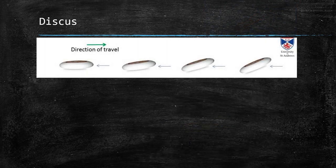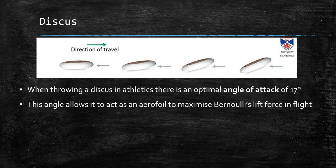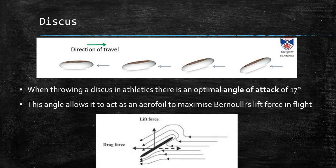Let's look at a discus. You can see the direction of travel, and if it's thrown flat it hasn't got that aerofoil shape. However, if you angle and tilt it, there is an optimal angle of attack which is 17 degrees. That 17 degrees acts as an aerofoil — the airflow goes over the top and underneath, maximising Bernoulli's lift force. The airflow has to travel up and over, so it moves faster, and therefore you get a lift force which means the discus stays in the air longer, making it travel further.